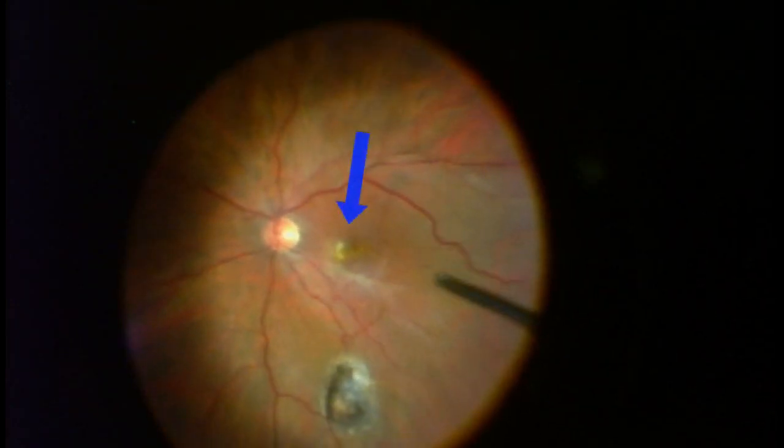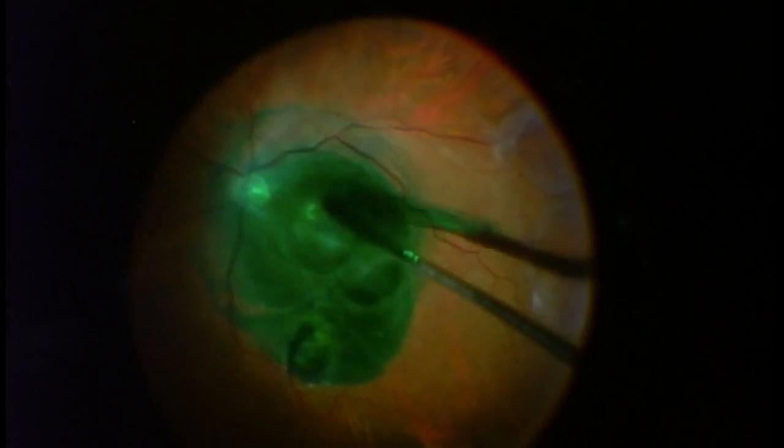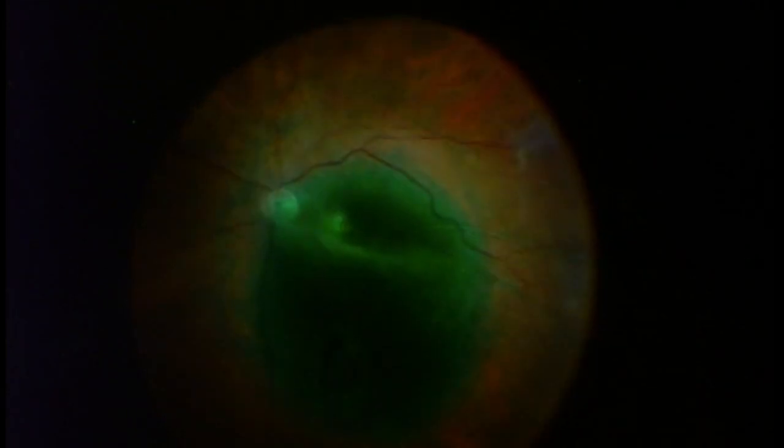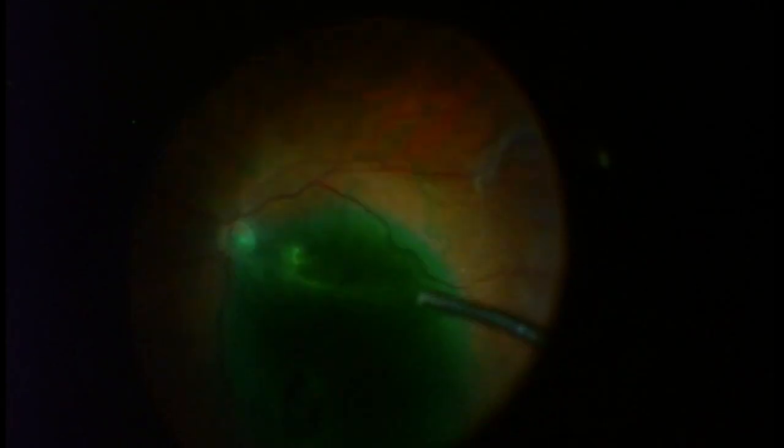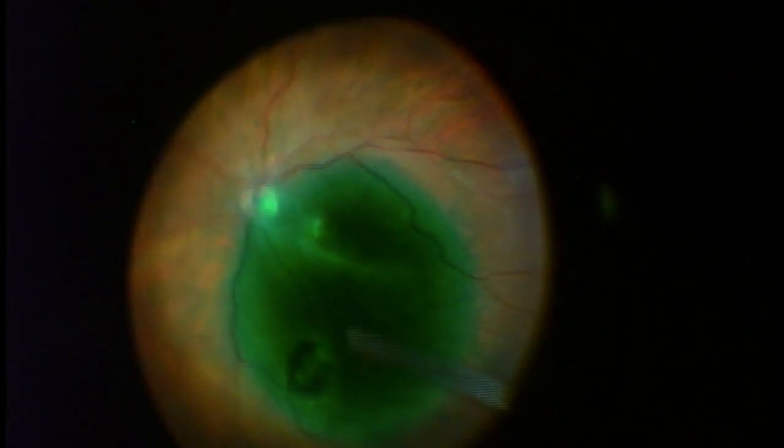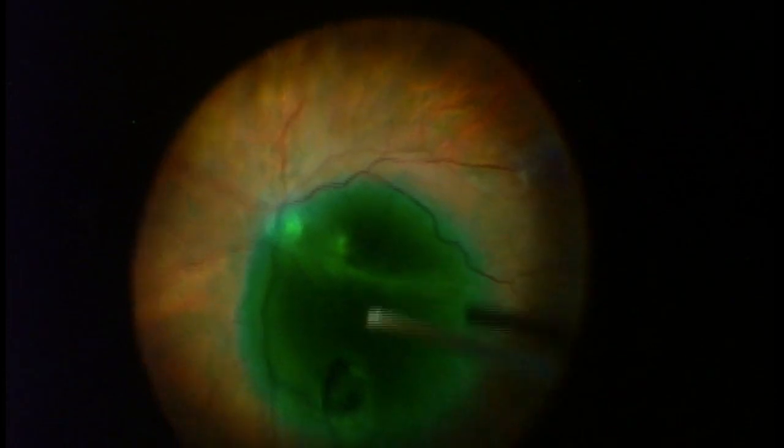The macula is that area which I'm covering with this green dye. The green dye is ICG dye. As we'll see in just a minute, it's going to stain a good portion of the epiretinal membrane so I can see exactly where I have to peel the epiretinal membrane.